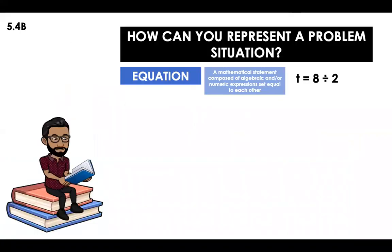So first of all, how can you represent a problem situation? We're going to start with an equation. This is a mathematical statement composed of algebraic and/or numerical expressions set equal to each other. For example, here they are telling me that t is equal to 8 divided by 2. One letter represents the unknown quantity.